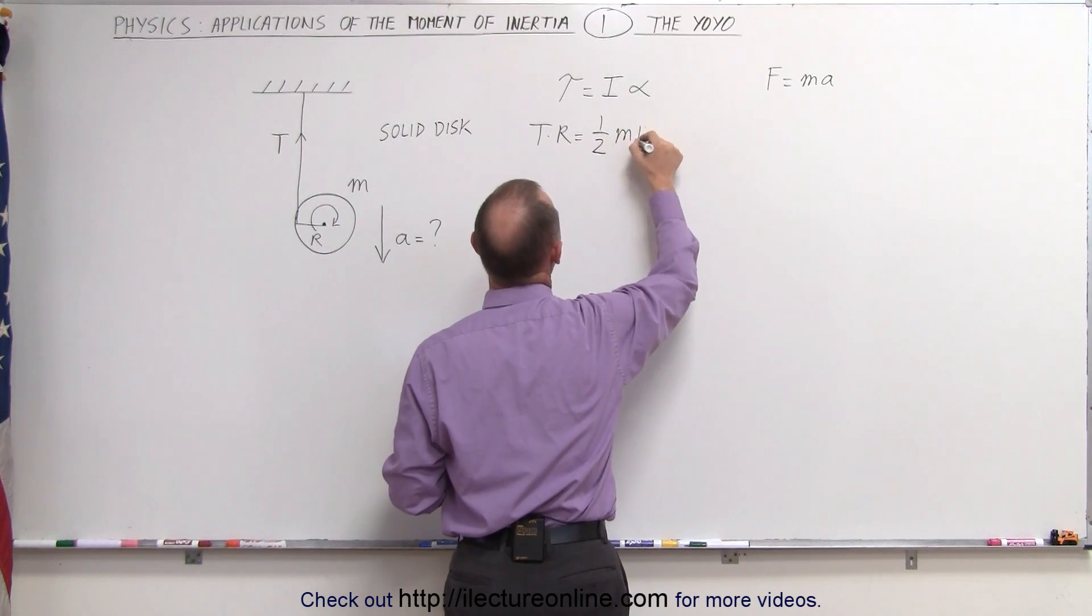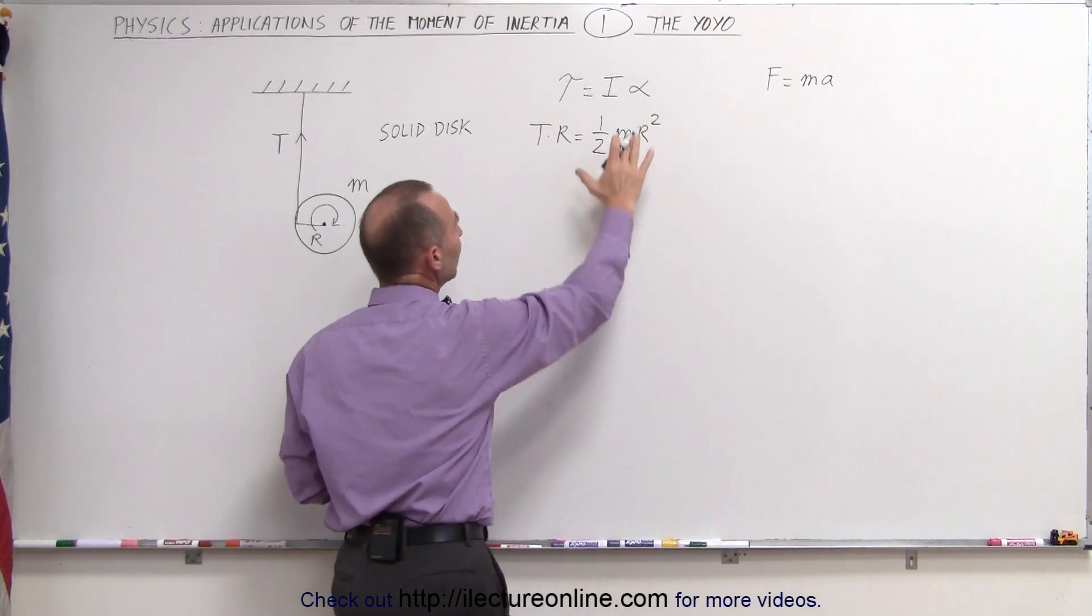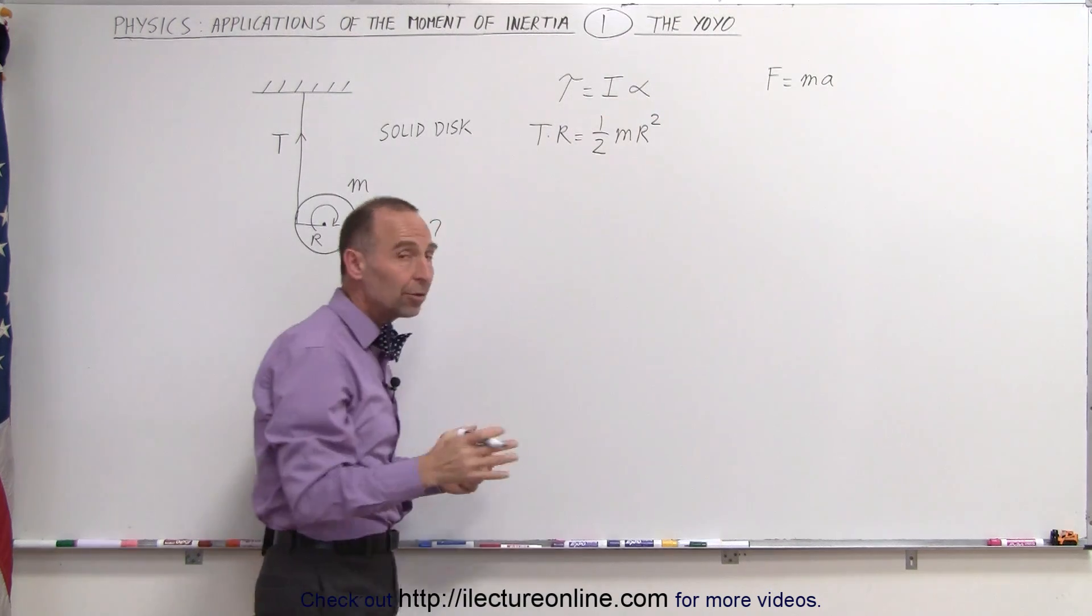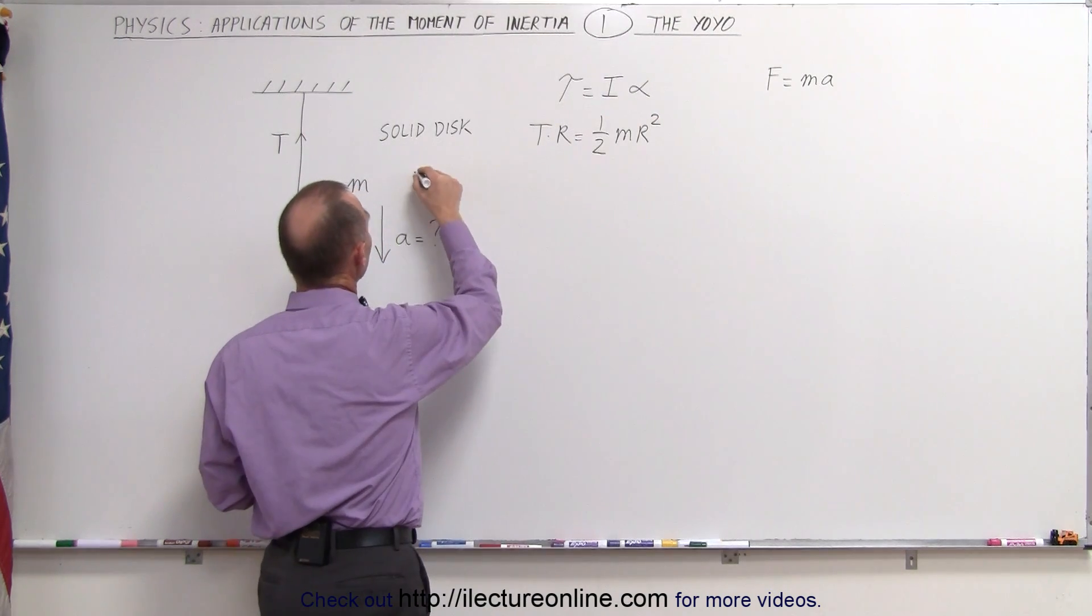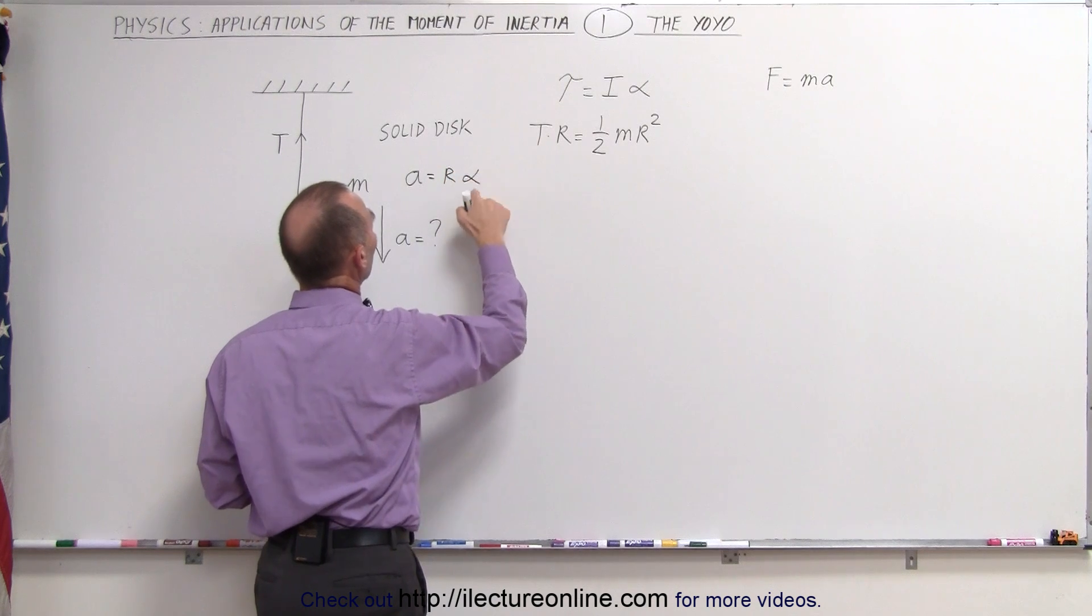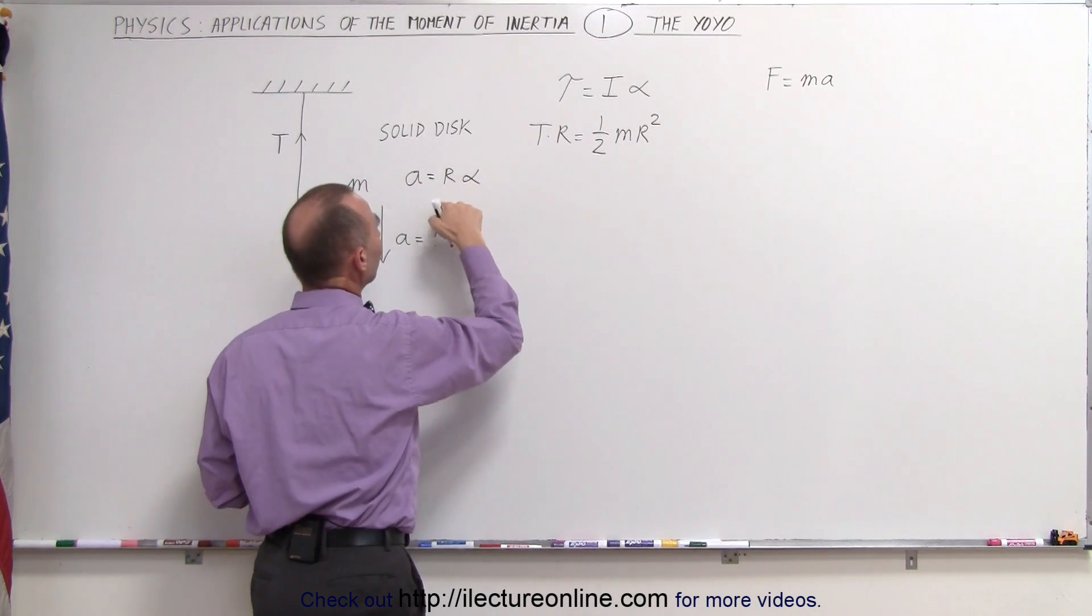The relationship between the angular acceleration and the linear acceleration we can write that A is equal to R times alpha or alpha therefore is equal to A divided by R.